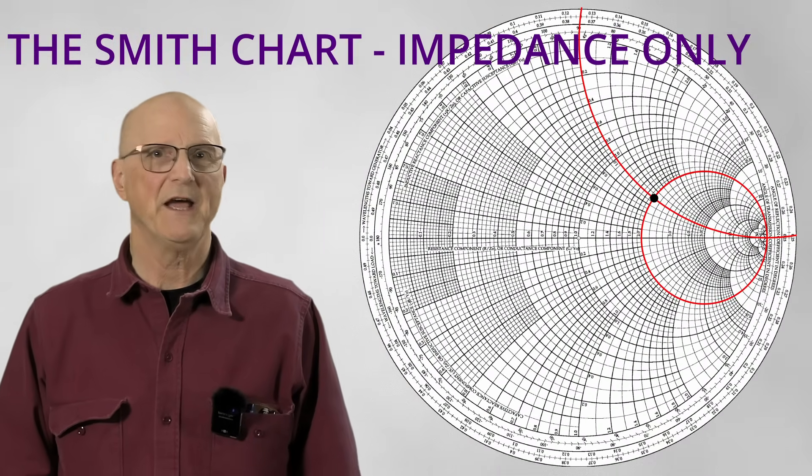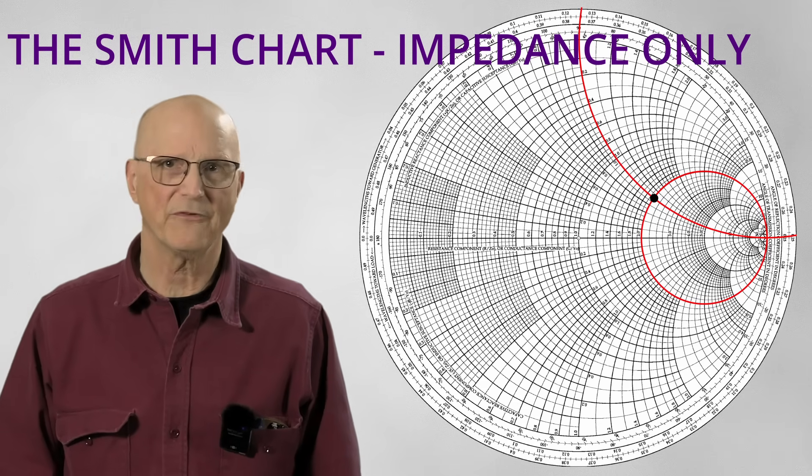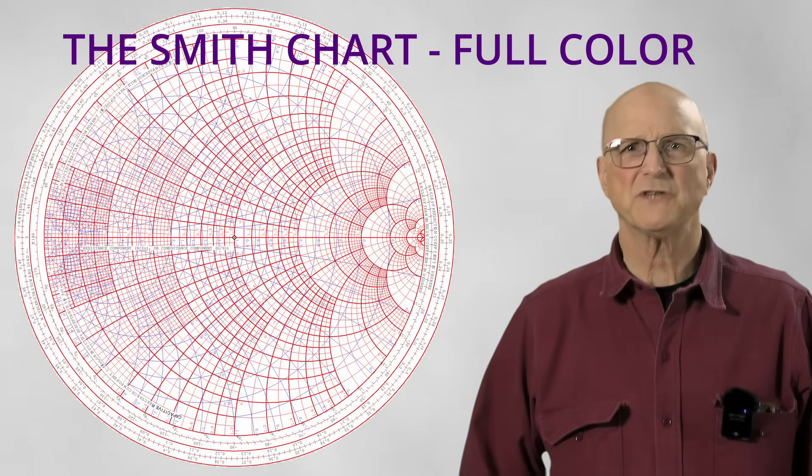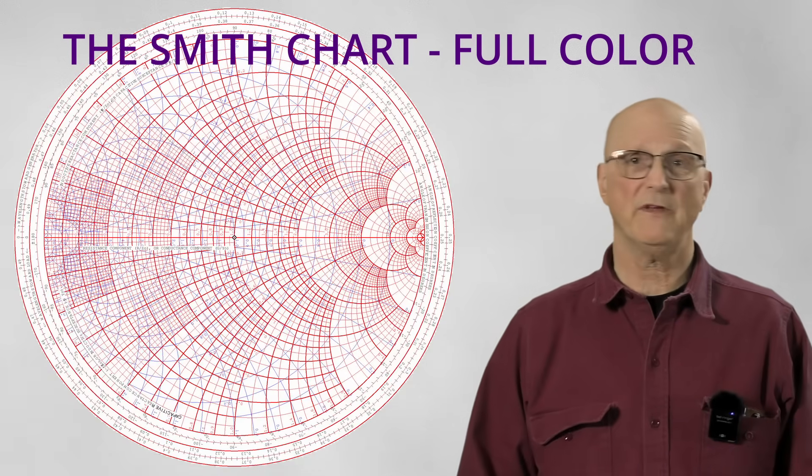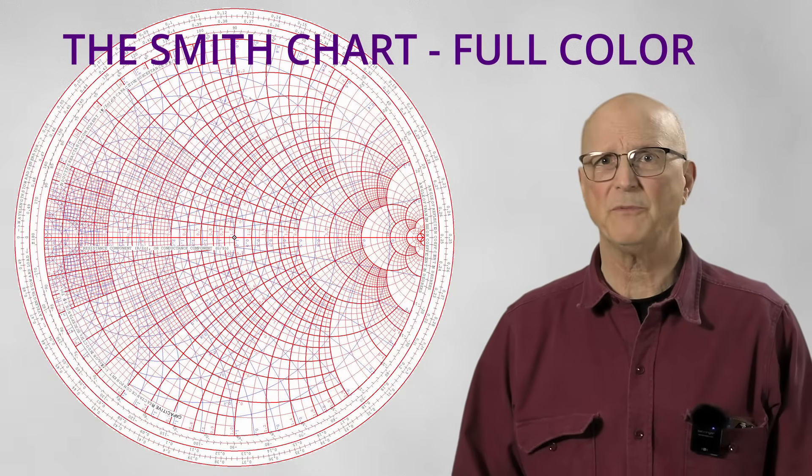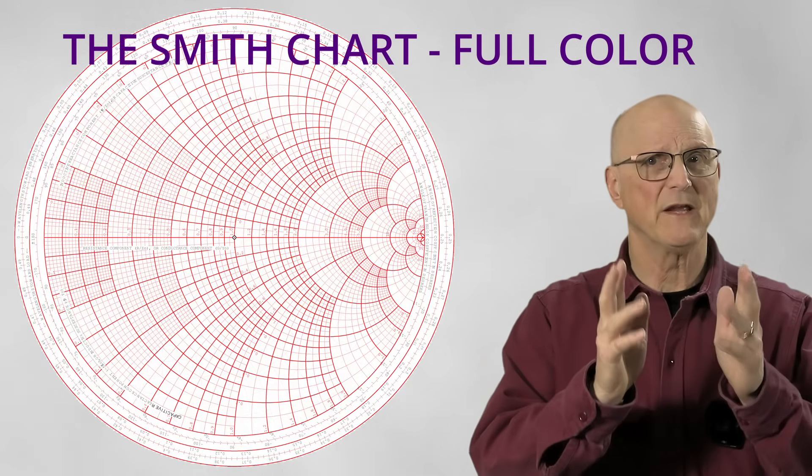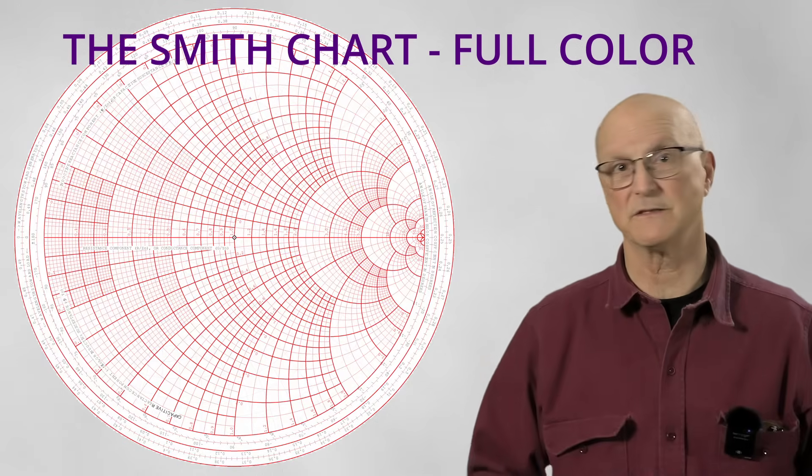Now that we have this down for the basic impedance only Smith chart, let's move to the complete color Smith chart. All of the same principles apply. Well, we just got done looking at the basic impedance only Smith chart, which is still here represented in all of the red lines. So really, there's nothing new here as far as impedance is concerned.